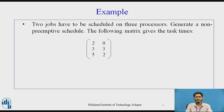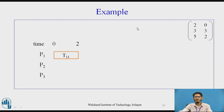We have an example where two jobs are to be scheduled on three processors, and we are expected to find the non-preemptive schedule. The given matrix provides the task times: the first column gives task times for job 1 — first task takes 2 units, second task 3 units, third task 5 units — and similarly for job 2. Since the first task of job 1 requires two time units, it is processed on processor P1 from time unit 0 to 2.